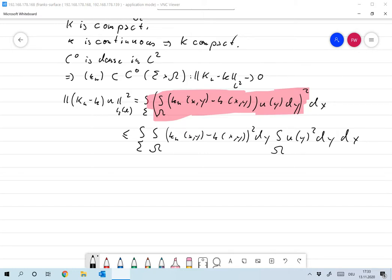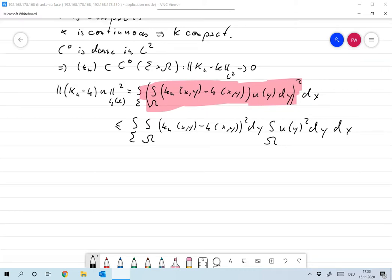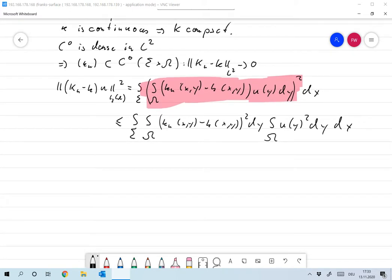Now, this one does not depend on - so, this is where we can just factor out the u(y). And what we have is that this one, the second term does not depend on x. So we have size of sigma times the integral over omega u(y) squared dy times the integral over sigma, integral over omega, K_n(x,y) minus K(x,y) squared dy dx.